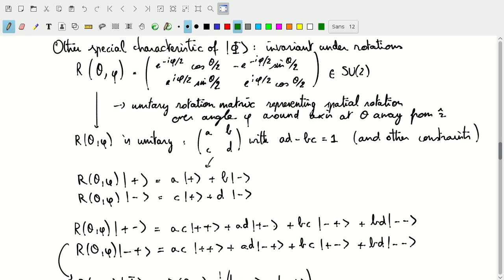For the |+-> state, we'll get ad. For the |-+> state, we'll get bc. And then for the |--> state, bd.